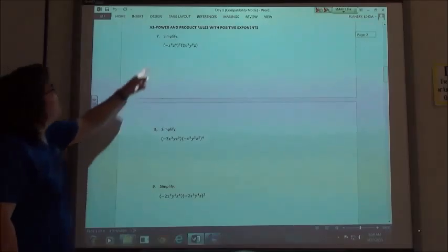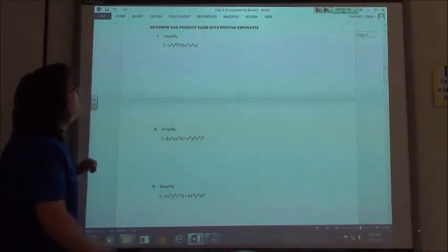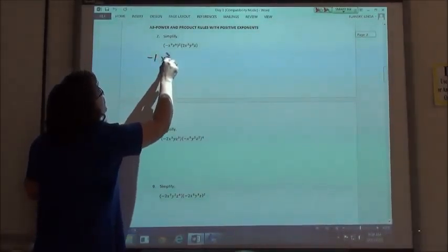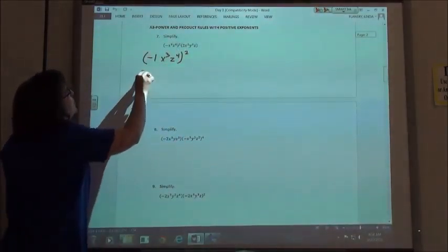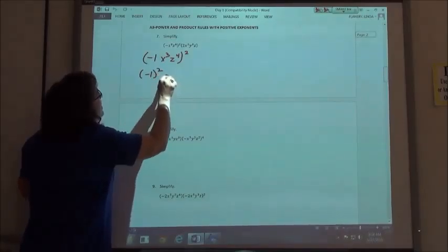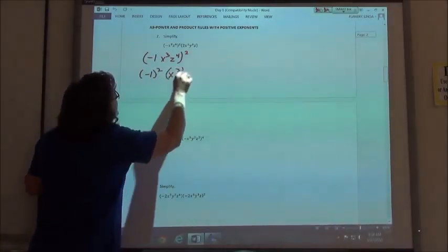Keep in mind if I have negative x to the third, z to the fourth, that it's negative 1x to the third, z to the fourth, and that I'm going to square that. So I'm going to take negative 1 and square it, x cubed and square it,